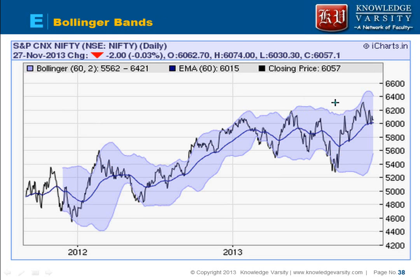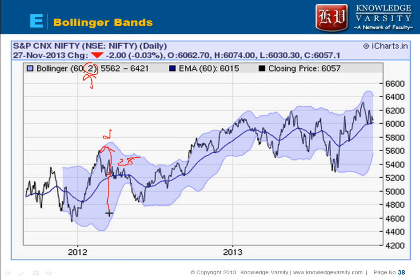In a Bollinger Band, we create a moving average — in this case, an exponential moving average on 60 days shown as the blue line. We then create a Bollinger Band around this 60-day moving average using two standard deviations above and two standard deviations below. If the stock price reaches the higher Bollinger Band, the price is expected to decrease. If it reaches the lower band, the price is expected to increase.